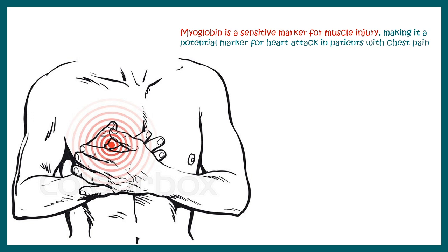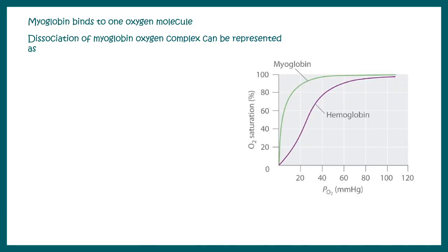Myoglobin is a sensitive biomarker for muscle injury. Measuring myoglobin levels in the blood can tell us about heart attack or any other kind of muscle injury as well.